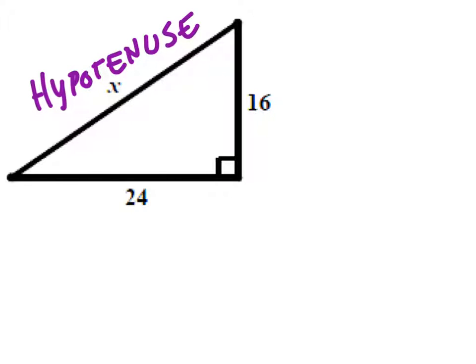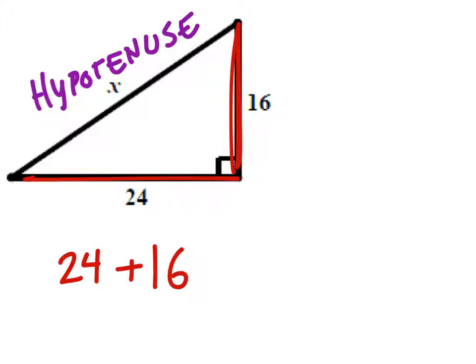Therefore, what we're going to do is we're going to take this leg, which is 24, and we're going to add it to this leg, 16, and we're going to square these.